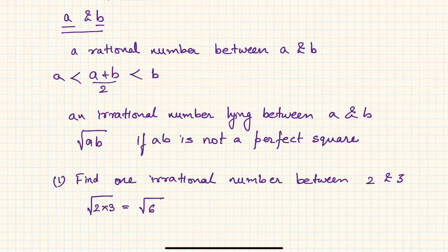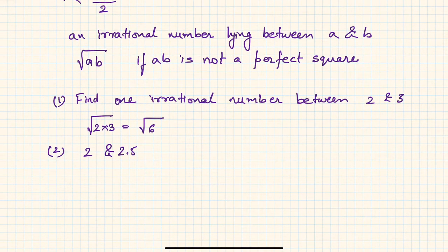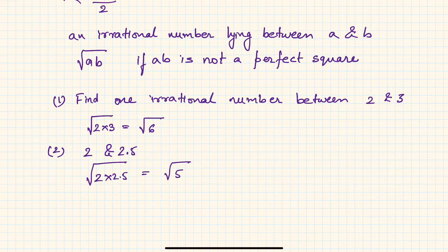Another example: find an irrational number between 2 and 2.5. It will be nothing but √(2 × 2.5) = √5. If you use a calculator, you will see that √5 is indeed between 2 and 2.5.